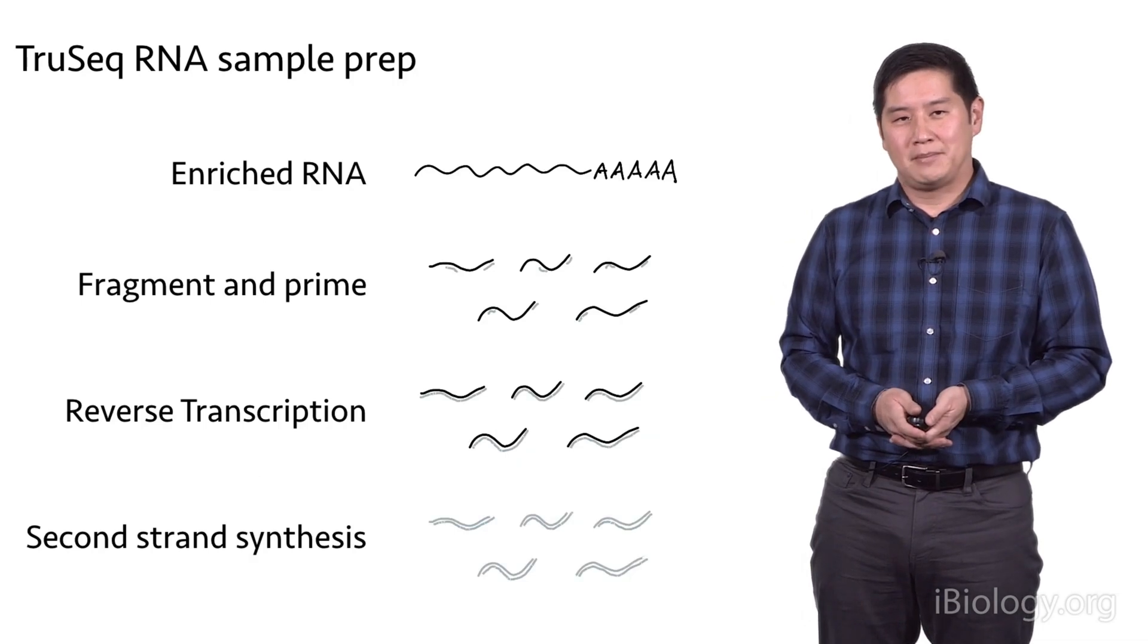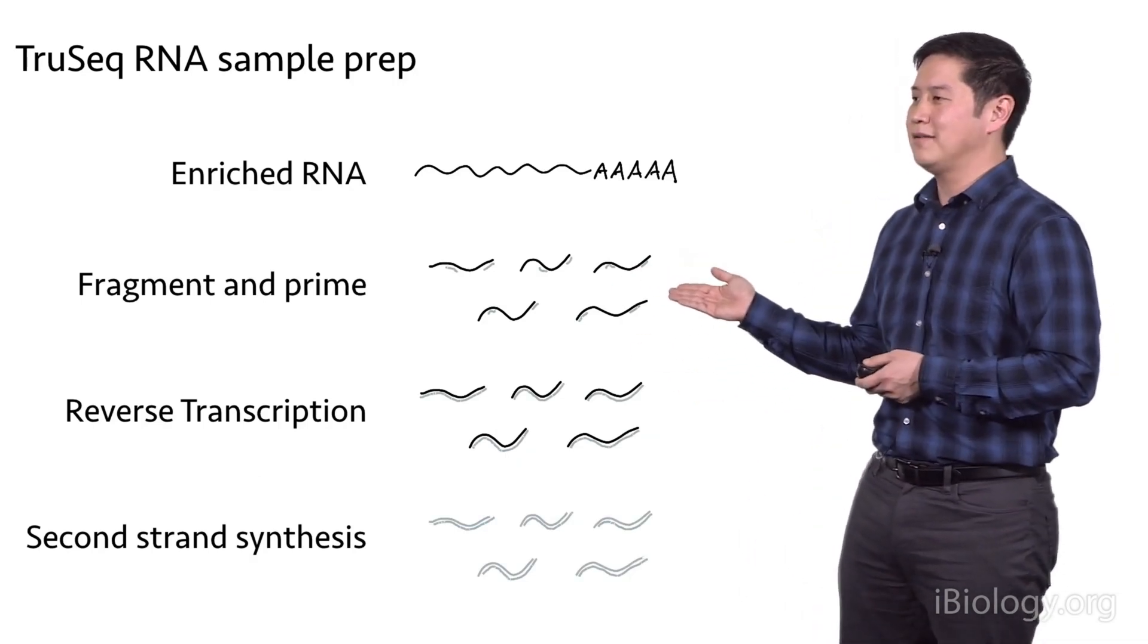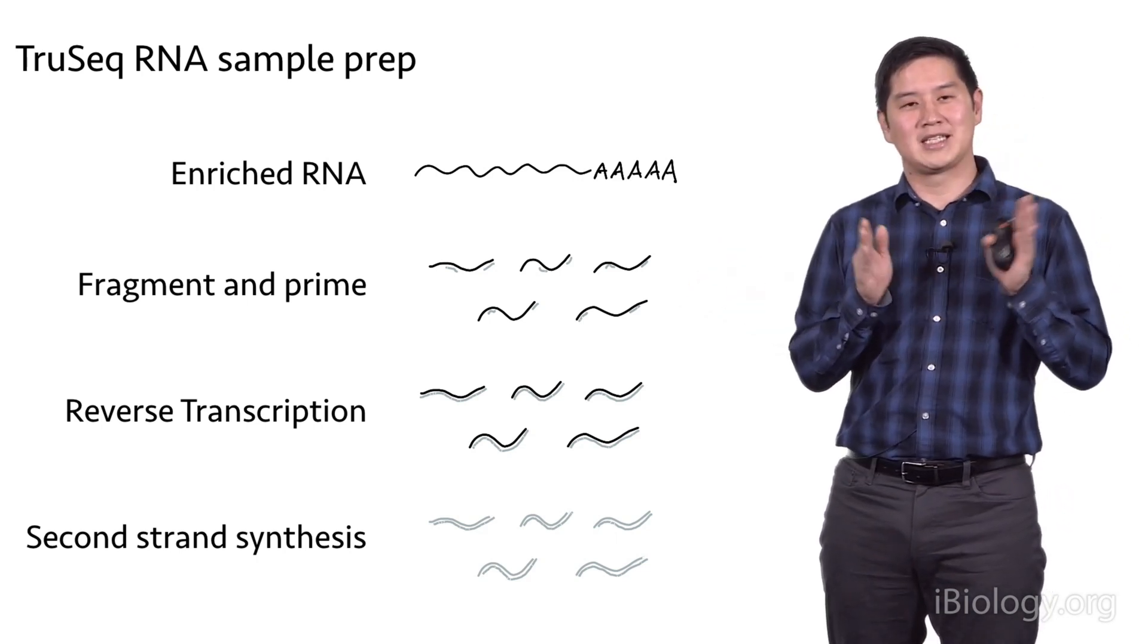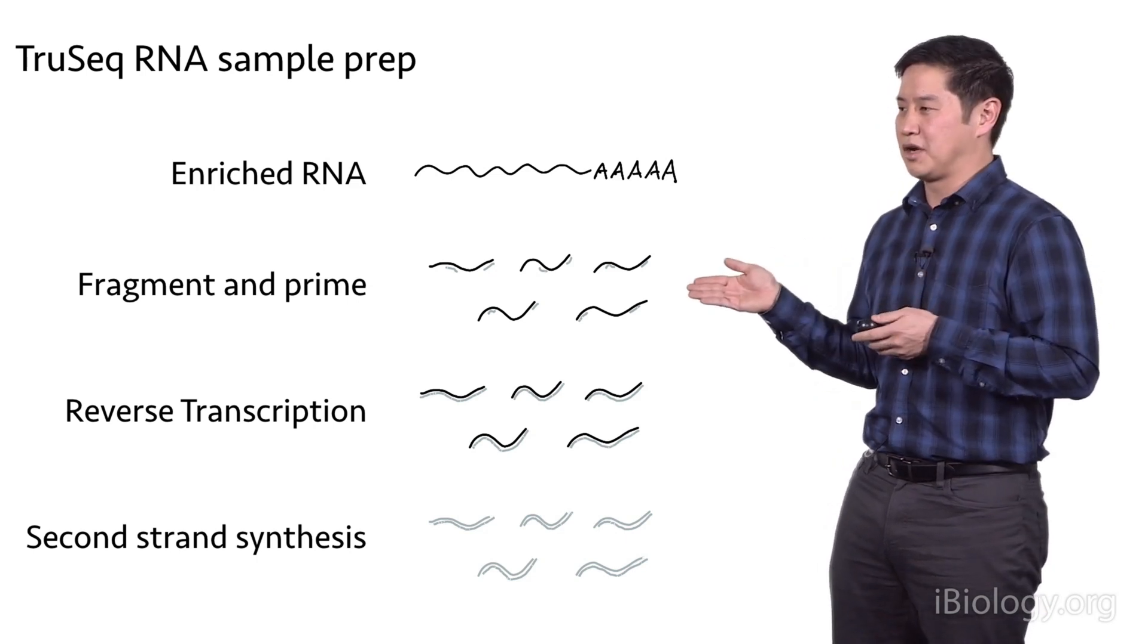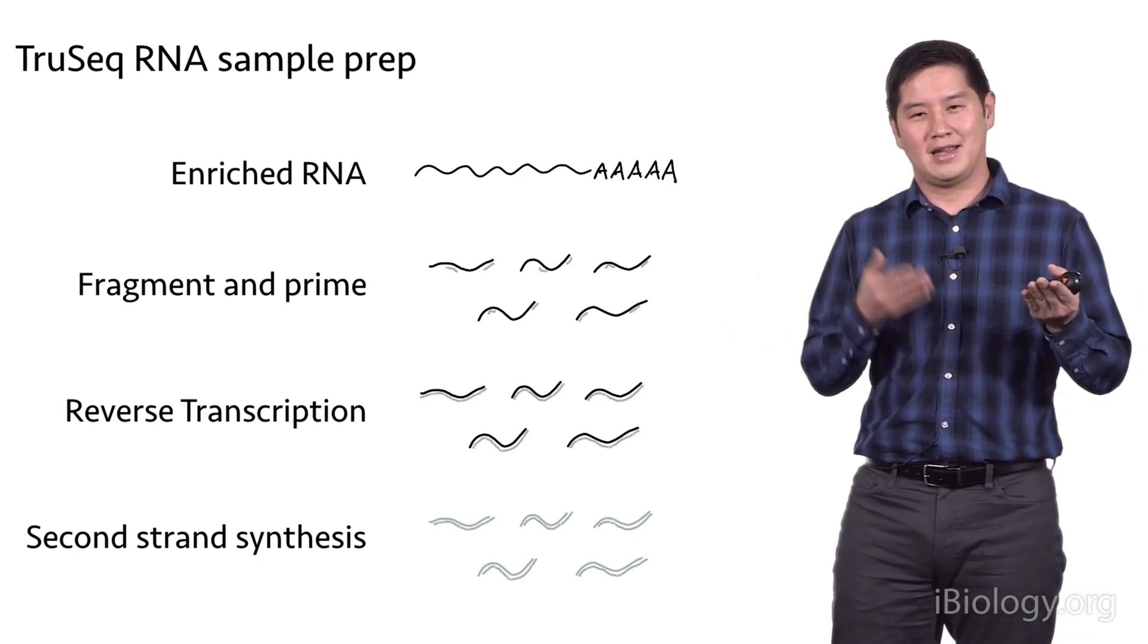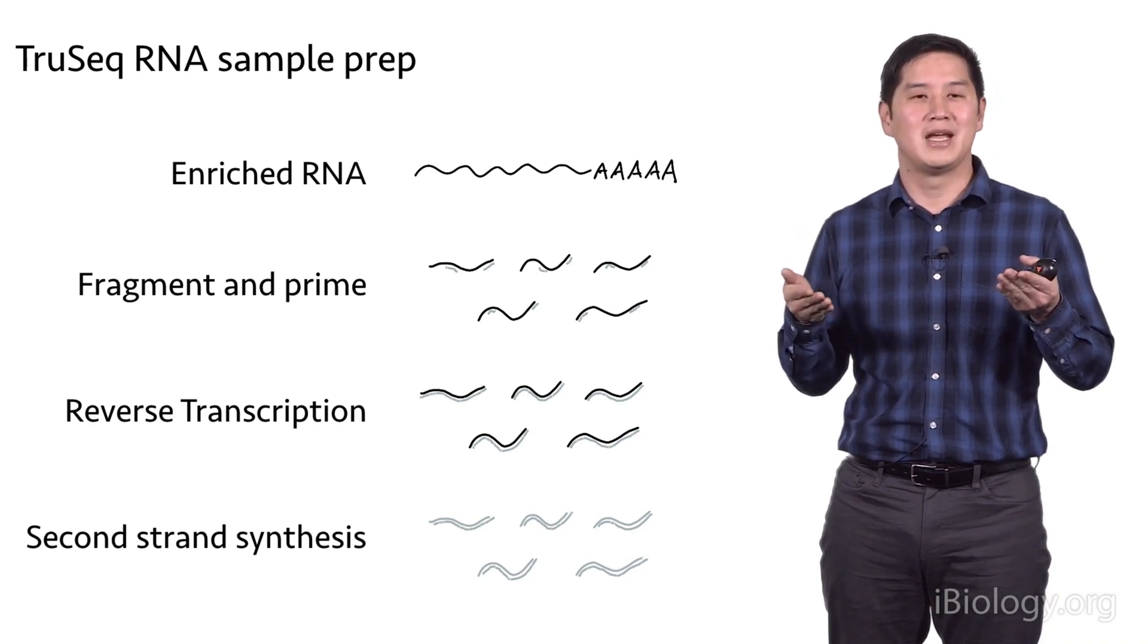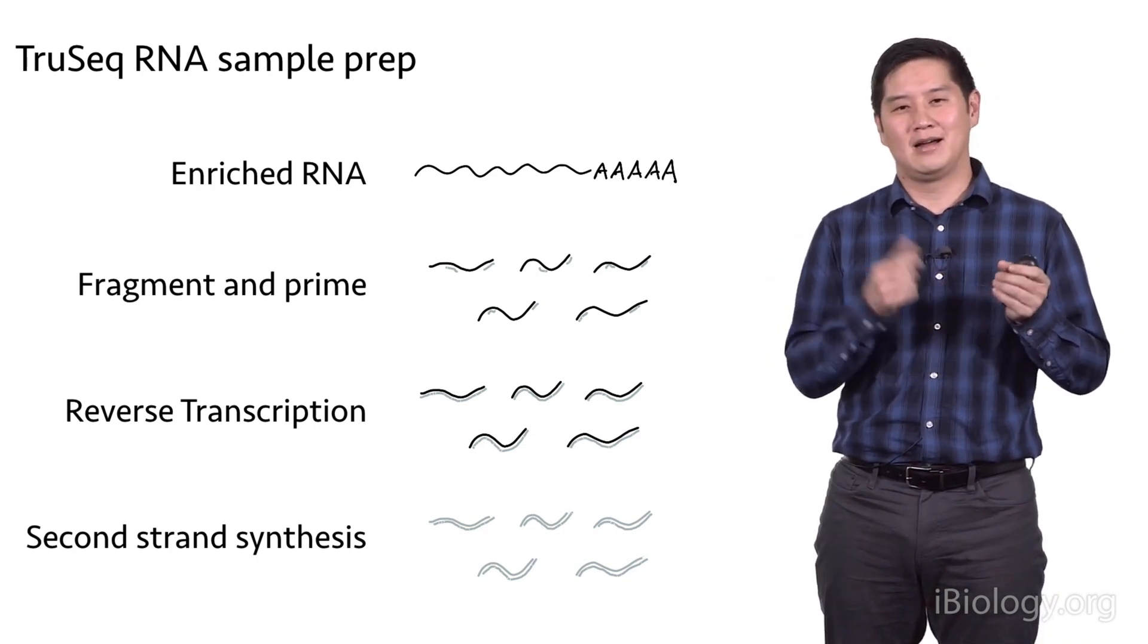With the TruSeq sample preparation, you take your enriched RNA and fragment it into small bits that are appropriately sized for Illumina sequencing. Then you prime them so that you can undergo a reverse transcription reaction. Reverse transcription is a process where you take RNA and use primers and a reverse transcriptase enzyme to generate a cDNA copy of that RNA.